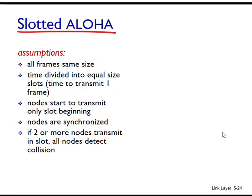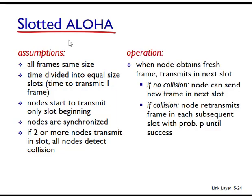In our description of slotted ALOHA, we assume the following. All frames are the same size. Time is divided into equal-sized slots, which equals the number of bits in a frame divided by the bitrate of the channel — in other words, a slot equals the time to transmit one frame. Nodes start to transmit frames only at the beginning of slots, and nodes are synchronized so that each node knows when a slot begins. If two or more frames collide in a slot, then all the nodes detect the collision events before the slot ends. Let P be a probability, that is, a number between 0 and 1.